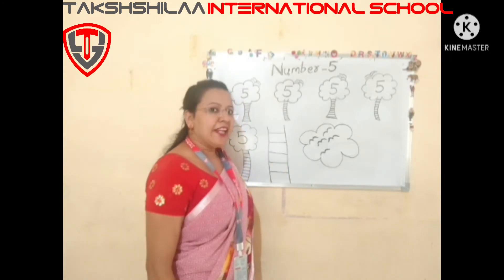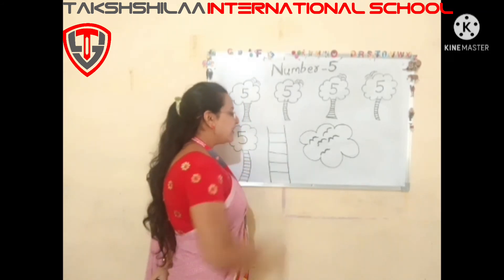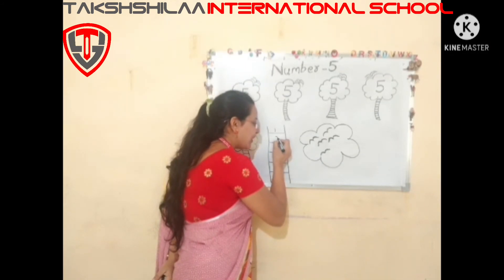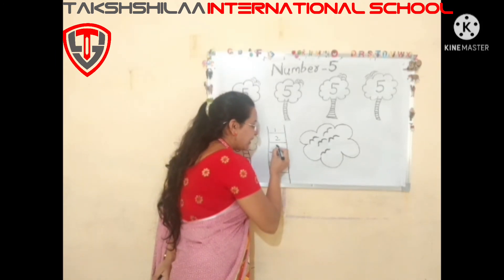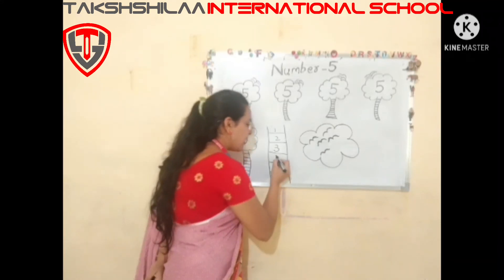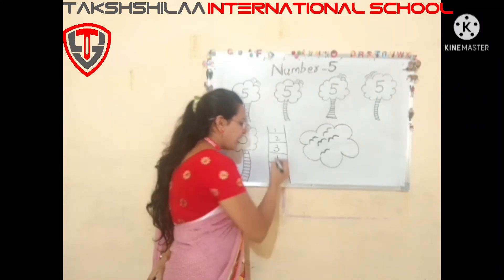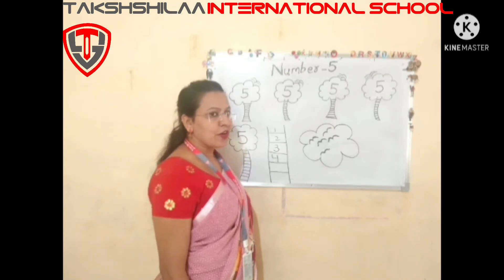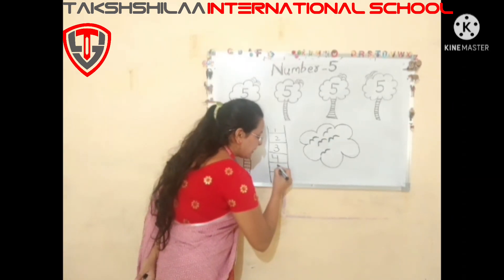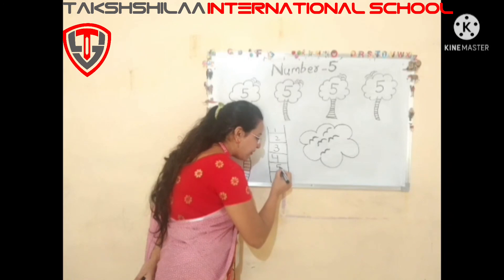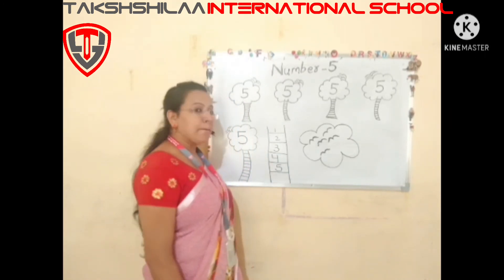We will write numbers one to five in this ladder. Number one, number two — right curve and sleeping line. Number three — two right curves. Number four — one standing line, another standing line, and a sleeping line. Number five — sleeping line, then small standing line, and a right curve. Map number 5.